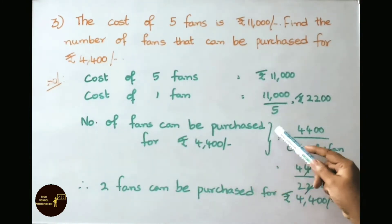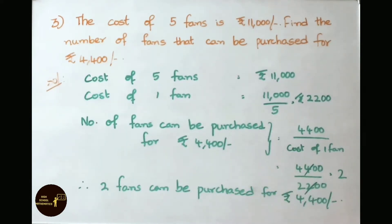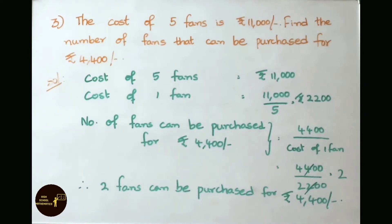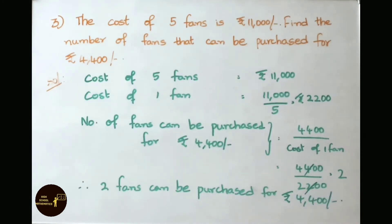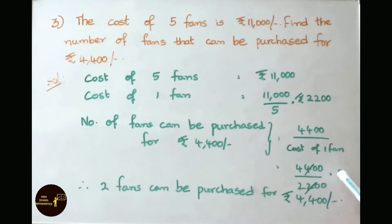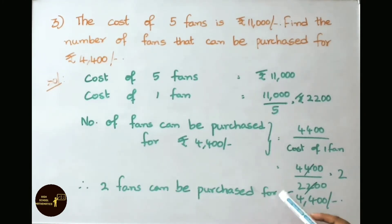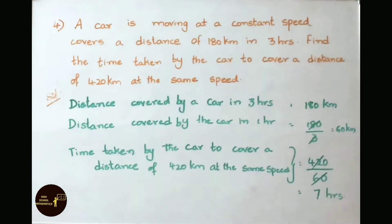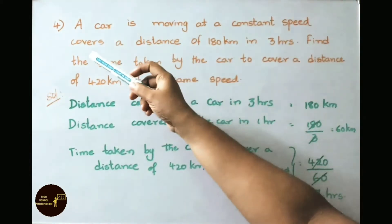Number of fans that can be purchased for 4,400 rupees equals 4,400 by 2,200. 2,200 times 2 is 4,400. Therefore, 2 fans can be purchased for 4,400 rupees.